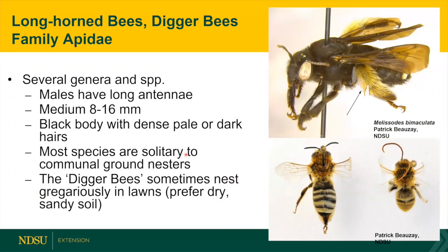There are also longhorn bees and digger bees in the Apidae family. On top is the Melissodes — I use this one as an example with the hairy legs. Several of them have long antennae, usually the male. The digger bee females often nest in lawns; they like dry, sandier soils. You sometimes see them be a bit pest-like when they get in large groups, especially if you have children around. They're easy to get rid of by just watering the area frequently because they don't like wet areas.